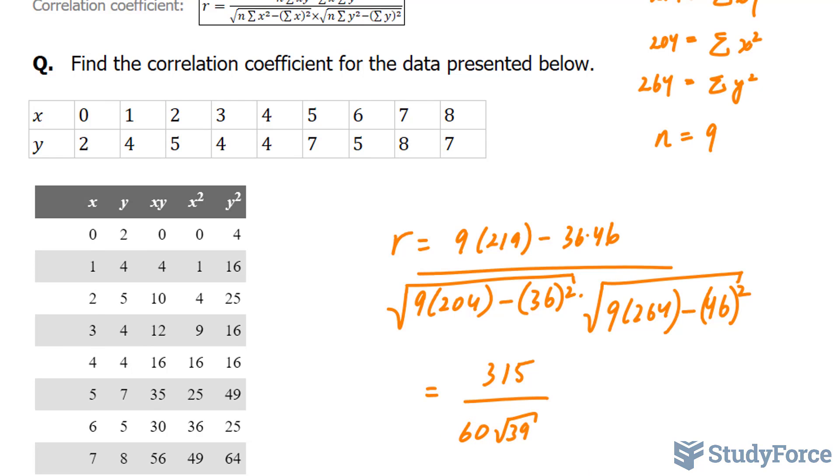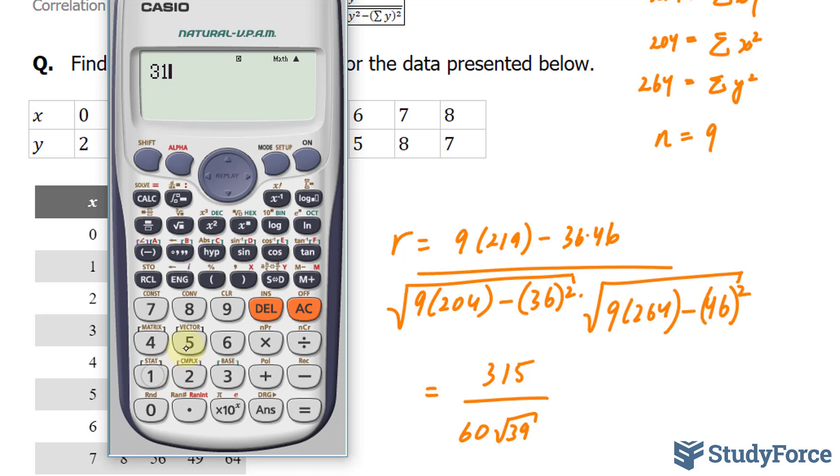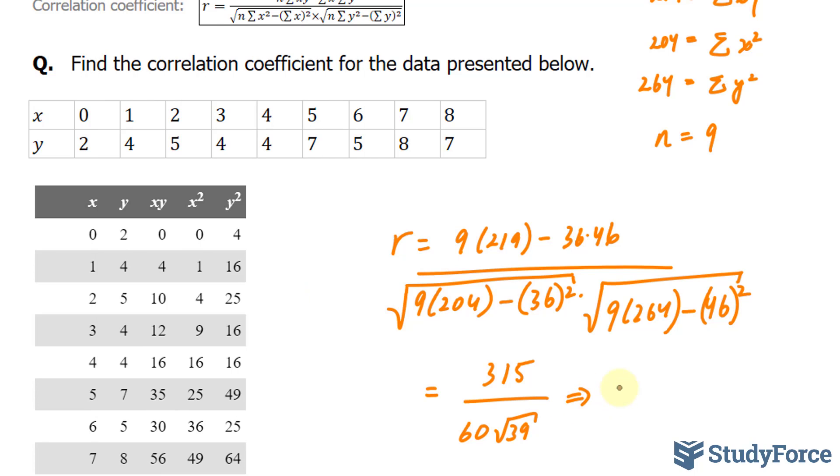All I have to do now is take 315, divide it by the answer, this gives me 0.8406.